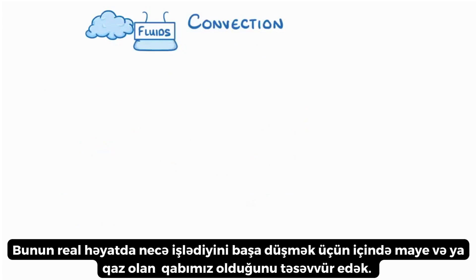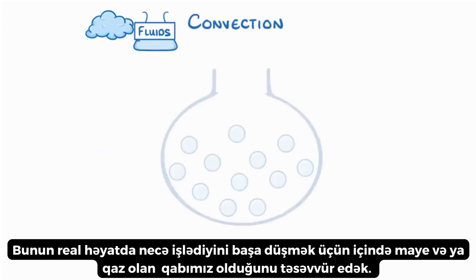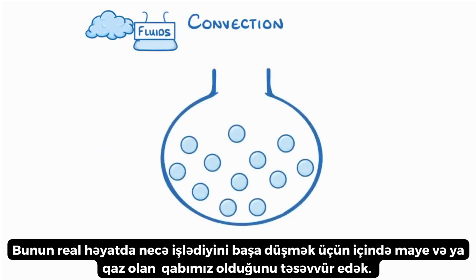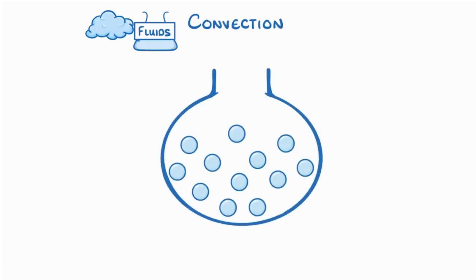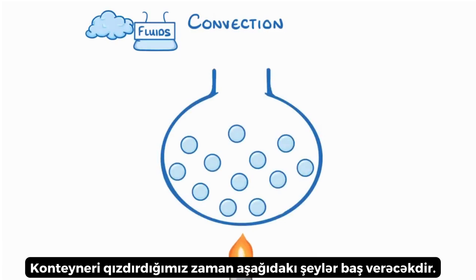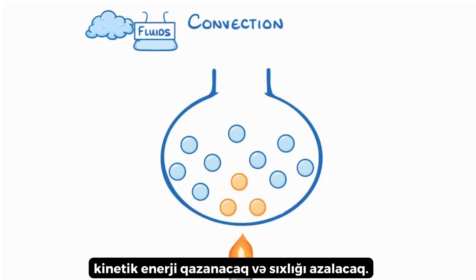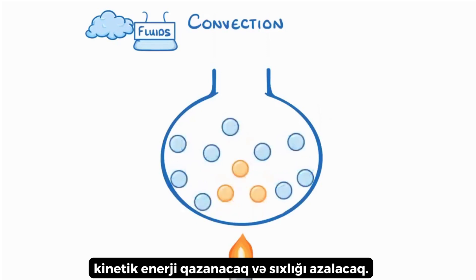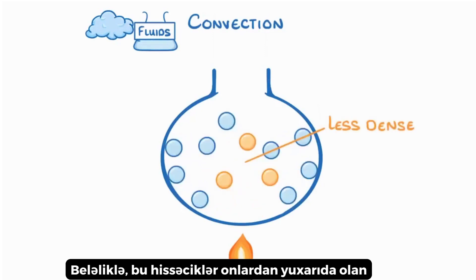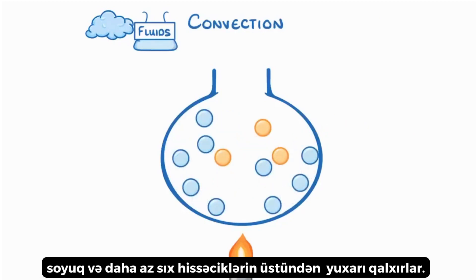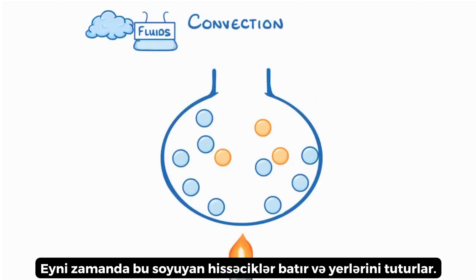To understand how this works in real life, let's imagine that we had a container of fluid — so that could be either liquid or gas. As we heat the container, the following things would happen. First, the particles near the heat source would gain kinetic energy and spread out, becoming less dense. Because they're less dense, these particles rise above the colder, denser particles above them. And at the same time, these cooler particles sink down and take their place.